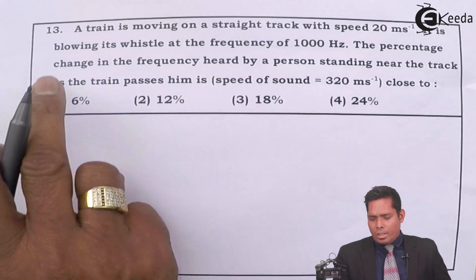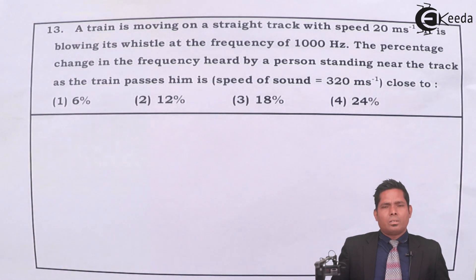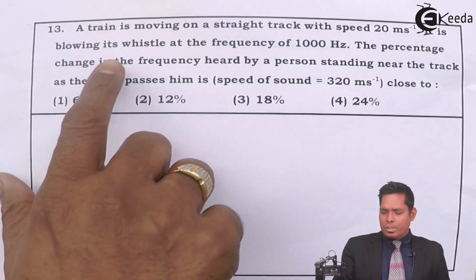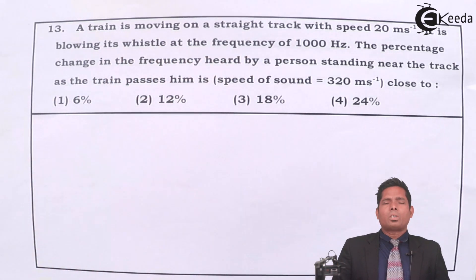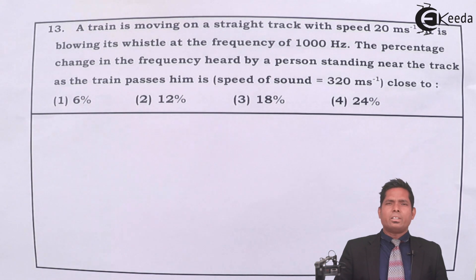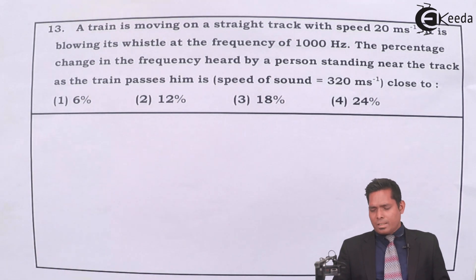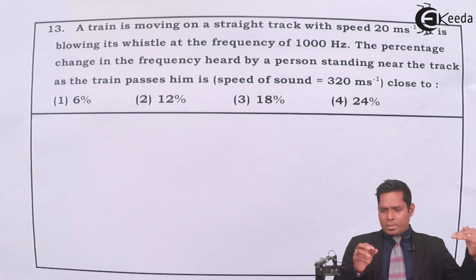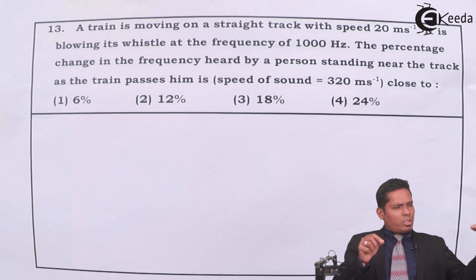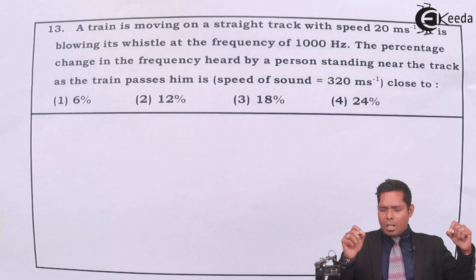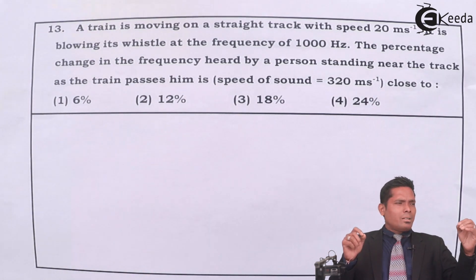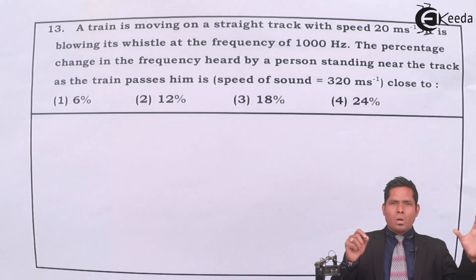Question number 13: A train is moving on a straight track with speed 20 meters per second. It is blowing its whistle at a frequency of 1000 Hz. We need to find the percentage change in the frequency heard by an observer standing near the track — stationary — as the train passes close to him. We have the velocity of the source and the actual frequency of the source of sound, that is 1000 Hz.